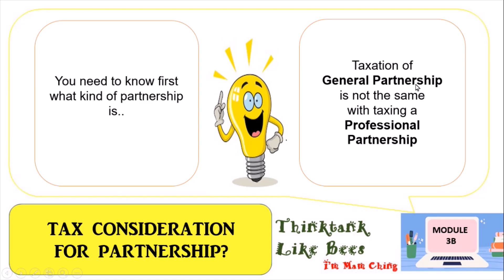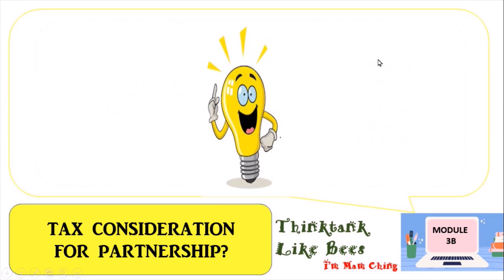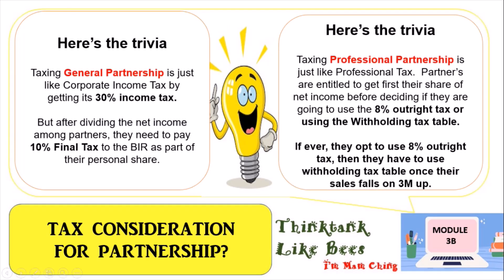Taxation of a general partnership is not the same as taxing a professional partnership — they are different. For a general partnership, it is just like corporate income tax, getting its 30 percent income tax. After dividing the net income among partners, they each need to pay 10 percent final tax to the BIR as part of their personal share. For a professional partnership, it is just like a professional tax.